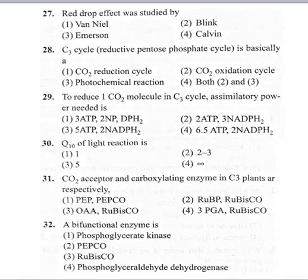Coming to the 31st question: carbon dioxide acceptor and carboxylating enzyme in C3 plants respectively. Options include PEP/PEPCO, RuBP, OAA/RUBISCO, and 3PGA/RUBISCO. In C3 plants, carbon dioxide is accepted by RuBP and the enzyme involved is RUBISCO. RUBISCO has dual activities — it can bind to both carbon dioxide and oxygen, but has more affinity for carbon dioxide. So the correct option is RuBP and RUBISCO.